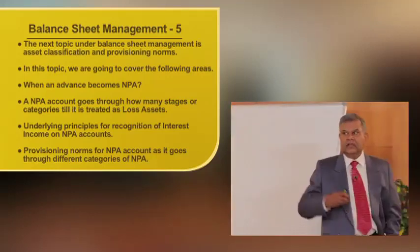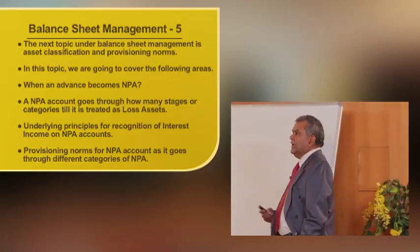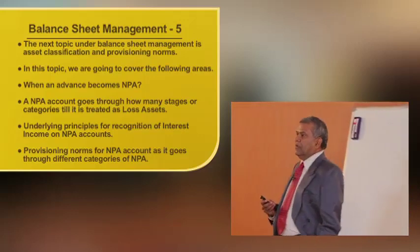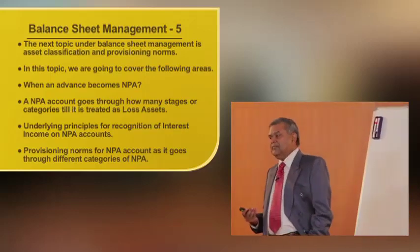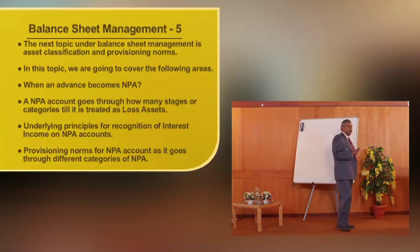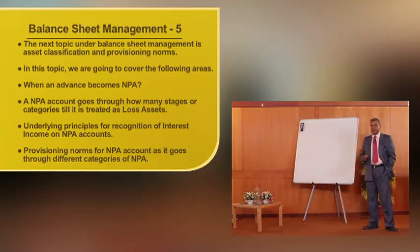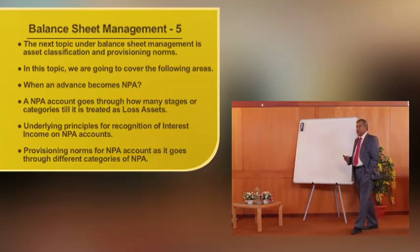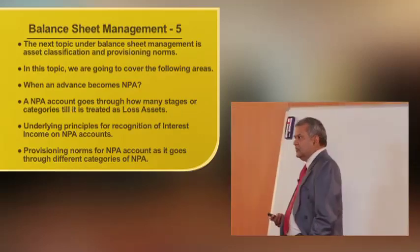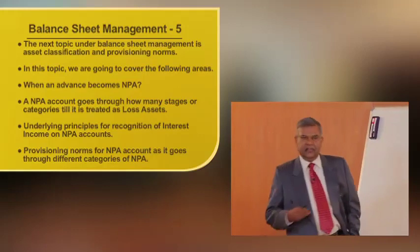Between a performing asset and a loss asset, we will also cover the underlying principle for recognition of interest income on NPA accounts and provisioning norms as the NPA goes through different categories. The moment it becomes NPA, it goes through substandard, doubtful — with three sub-stages — and finally a loss asset, from where it is written off.